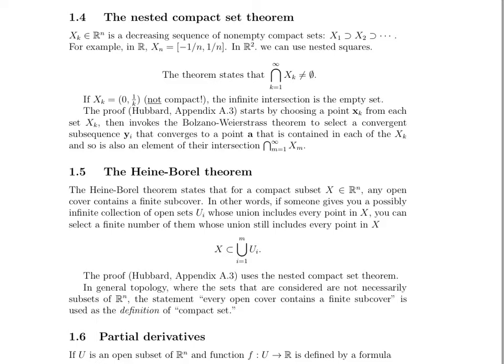So what this is saying is that you have x1, x2 is a subset of x1, x3 is a subset of x2 — it's sort of like those Russian nesting dolls. So for example, in R, x sub n could be the closed interval from negative 1 over n to positive 1 over n. And in R2, we can use nested squares, and so on up through R3, R4, R5.